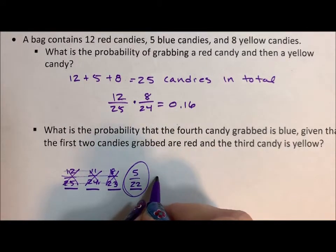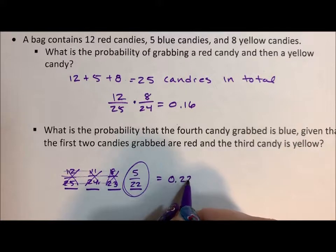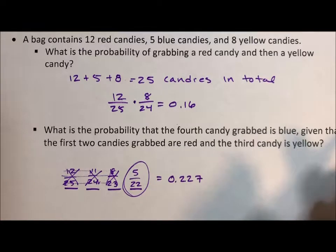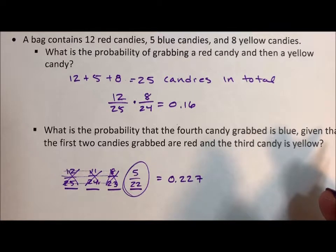And 5 divided by 22 is 0.227. So don't get caught that just because I tell you what the first three are, they're just trying to let you know that the first three aren't yellow. That's the only reason they give you the colors. They're not asking you to put those three into your probability calculation.